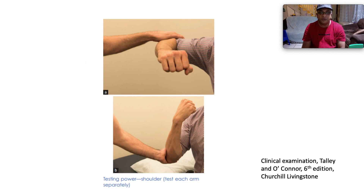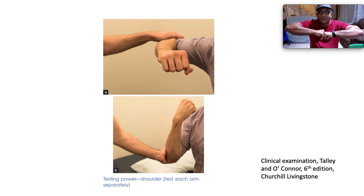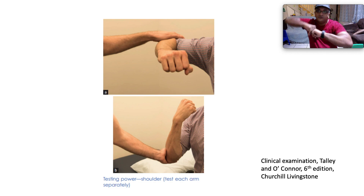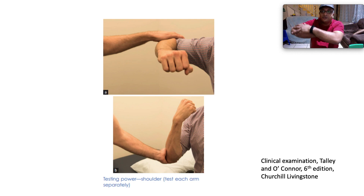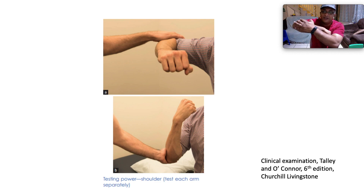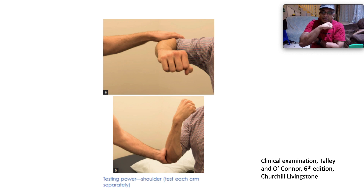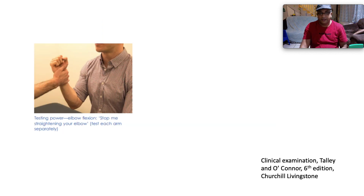When testing power at the shoulders, ask the patient to put their arms out like airplane wings. Ask the patient to push upward against you — that's testing shoulder abduction — and then to bring the shoulders in against you for shoulder adduction. At the elbow, ask the patient to bend the elbow and push against you to stop you from straightening it — that's elbow extension.